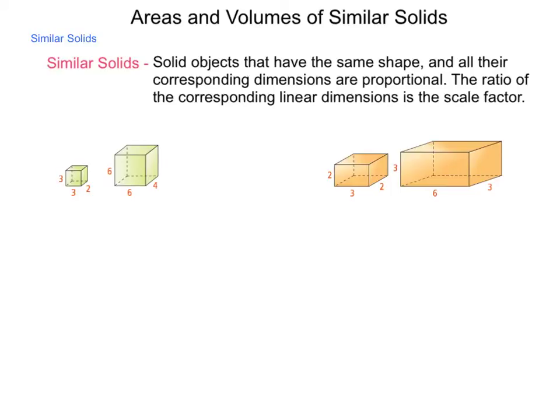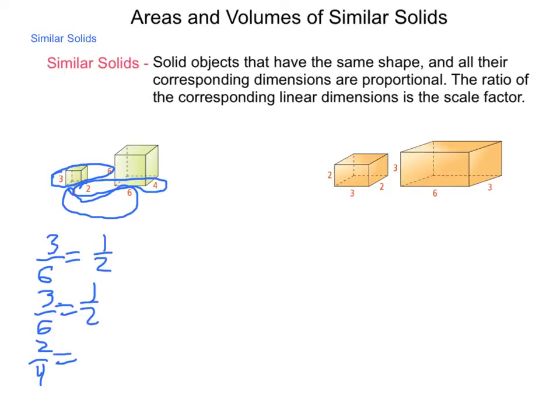What we need to do is match them up. So I'm circling matching dimensions. We have a 3 to 6, another 3 to 6, and then a 2 to 4. The question is, does each corresponding set simplify to the same fraction? Well, 3 to 6 is simply 1 half, and so is the other 3 to 6, and 2 fourths is also 1 half. So yes, these are similar.